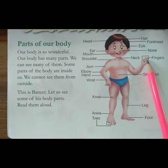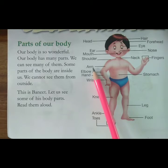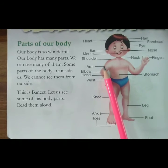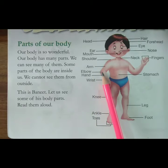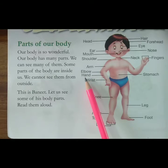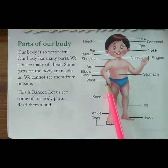Fingers — Fingers means ungliyaan, haath ki ungliyaan. Arm — Arm means baah. Elbow — Elbow means koni. Hand — Hand means haath. Wrist — Wrist means kalai.